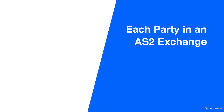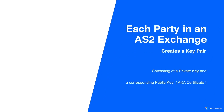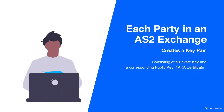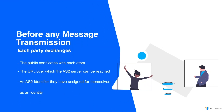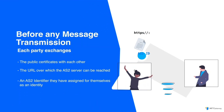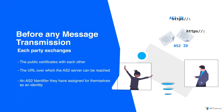Each party generates a key pair comprising a private key and its corresponding public key. Subsequently, they share this public key, often referred to as a certificate, along with the URL of their AS2 service and an AS2 identifier with one another.